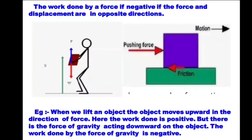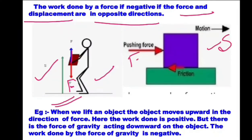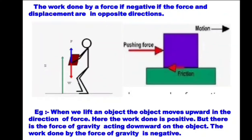The work done by a force is negative if the force and the displacement are in opposite directions. Suppose a man is lifting an object from the ground — the force applied by the earth on the block acts downward whereas the object is moving upward, so force and displacement are opposite. The work done by gravity is therefore negative. Similarly, the force of friction always acts in the opposite direction to the direction of motion, so when we apply force and the object moves to the right, friction acts in the opposite direction. The work done by the force of friction is negative.